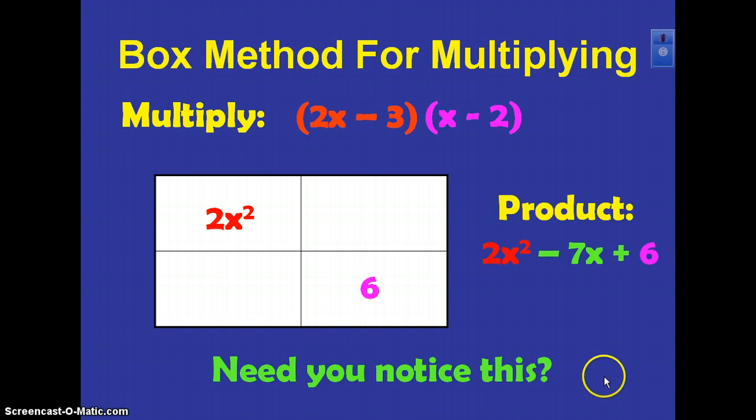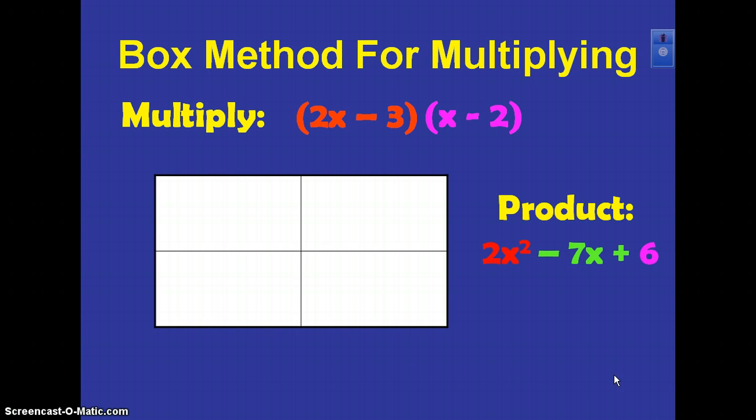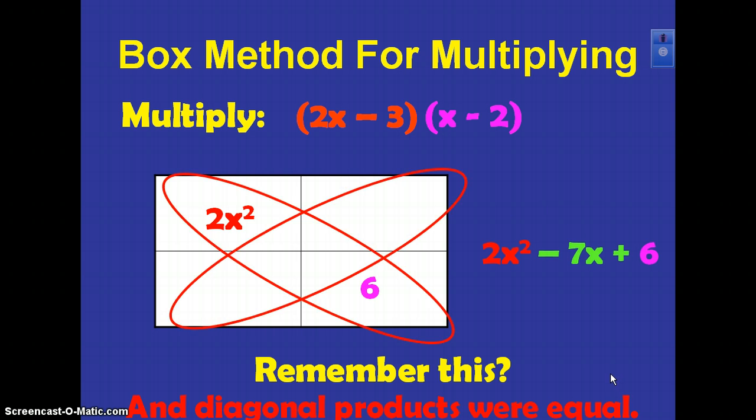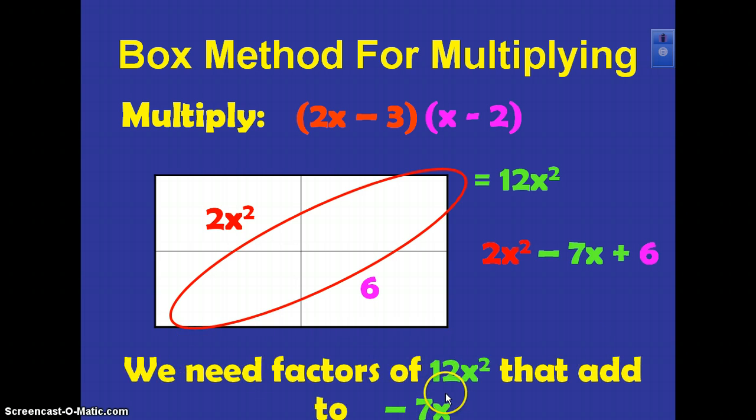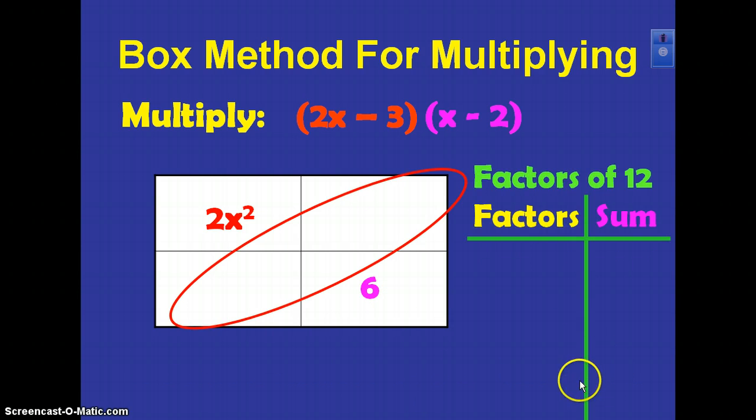Next step. Do you remember this? The diagonal products were equal. Do you remember that? We're going to keep that in mind for our next step. We need factors of 12x squared that add up to negative 7x. Where'd I get the 12x squared? I multiplied these two together, my quadratic and my constant. So I need to find factors of 12 that add up to negative 7.